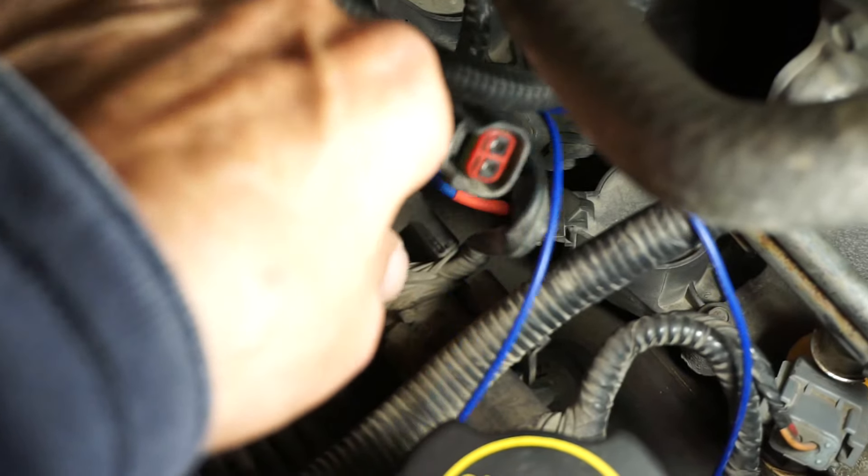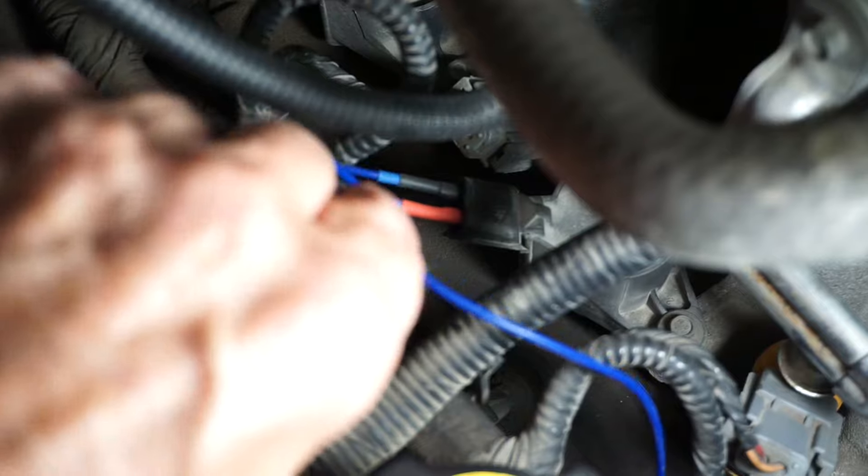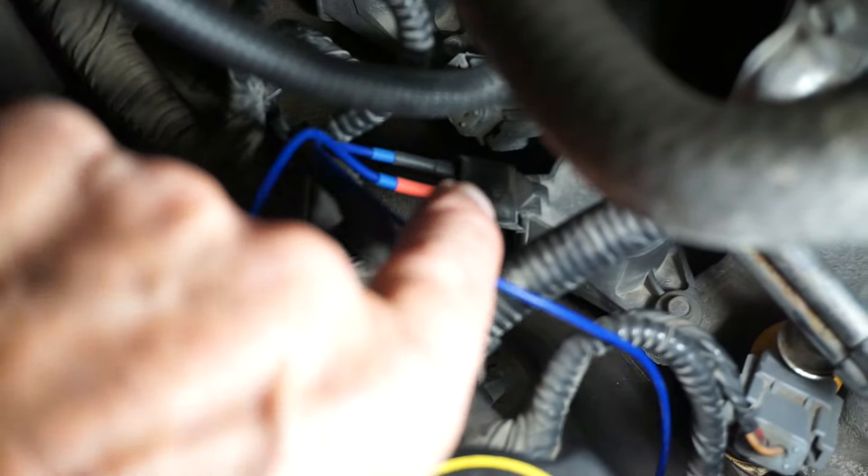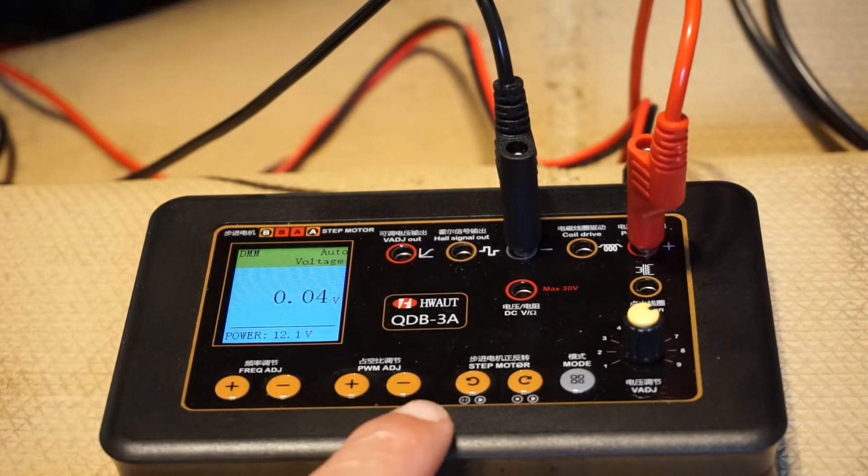Disconnected the coil. I got test leads on the coil directly. Engine will be off. Key will be off. It's the QDB only that's going to be activating that coil. The QDB is powered by the vehicle battery. So first we set our parameters.